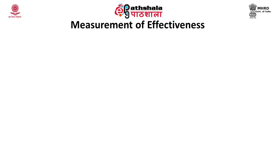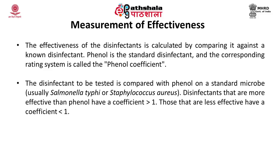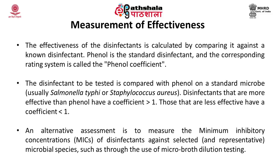The effectiveness of disinfectants is calculated by comparing them against a known disinfectant. Phenol is the standard disinfectant, and the corresponding rating system is called the phenol coefficient. The disinfectant to be tested is compared with phenol on a standard microorganism, which is usually Salmonella typhi or Streptococcus aureus. Disinfectants more effective than phenol have a coefficient greater than 1; those less effective have a coefficient less than 1. An alternative assessment measures the minimum inhibitory concentration against selected microbial species using micro broth dilution testing or disc diffusion assay.